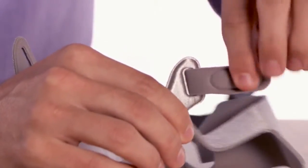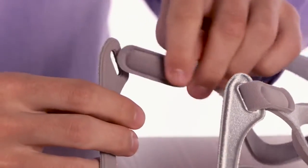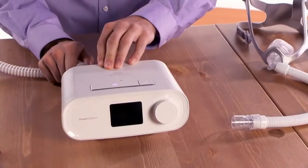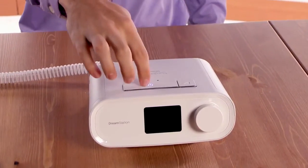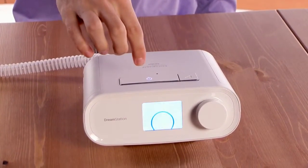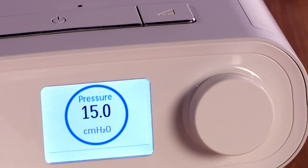Put on your mask and headgear. If you have questions about your mask, please refer to the mask instructions. Connect the tube to the device and mask. Press the therapy button on top of the device to turn on the airflow and begin therapy. The current delivered pressure will display on the screen.